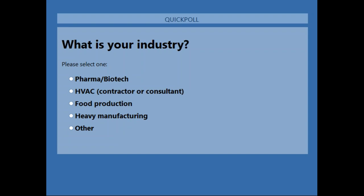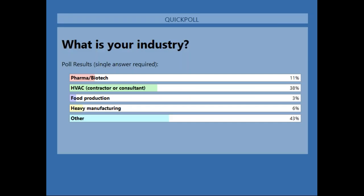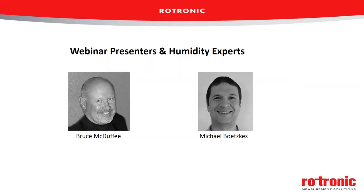We've got automotive testing, industrial minerals, semiconductor, automotive, OEM rail car, HVAC, retail supermarkets, and education. HVAC is well represented, some pharma folks, a few heavy manufacturing. Thanks everyone for sharing that. The next poll before we get into the presentation is: why do you want to learn about the psychrometric chart? Options include it's just fun, you've always wanted to learn, it helps you understand humidity measurement, or you use it in your profession regularly.